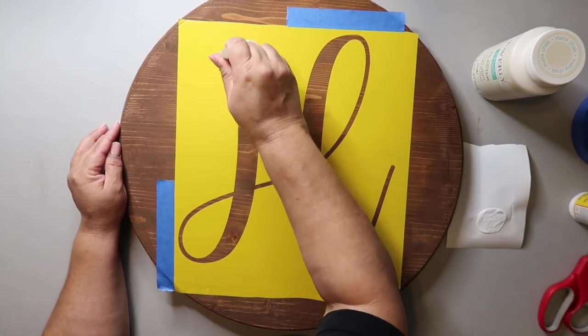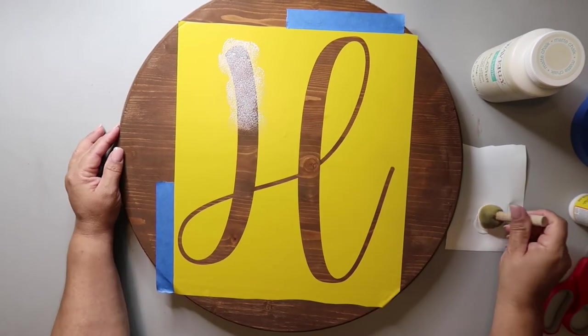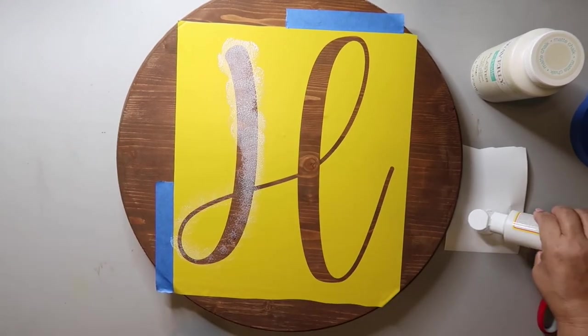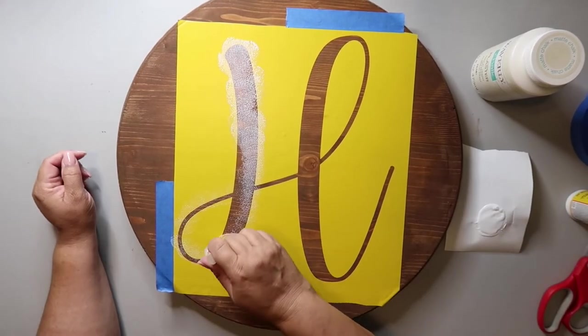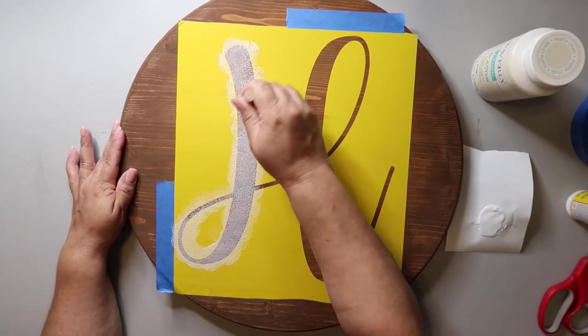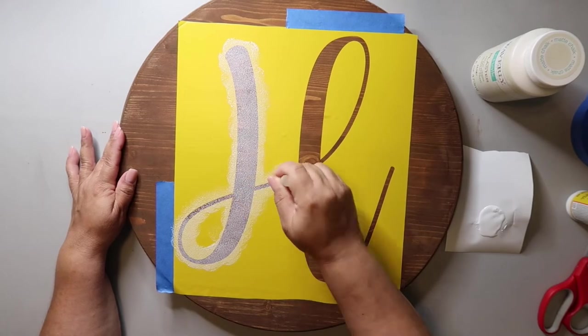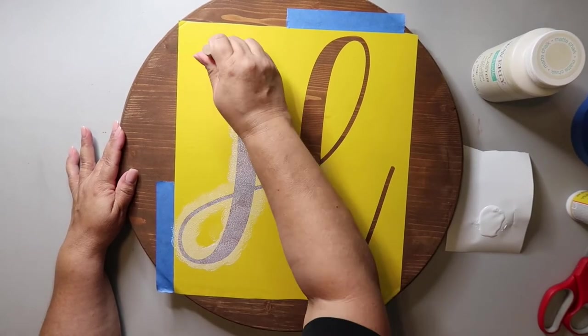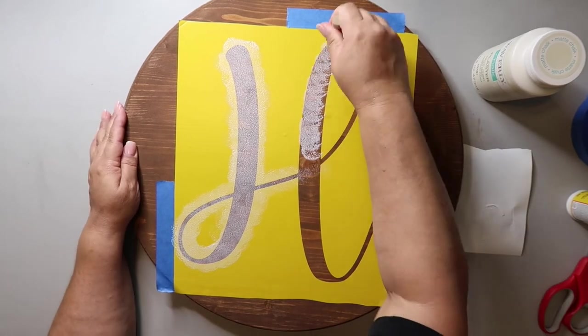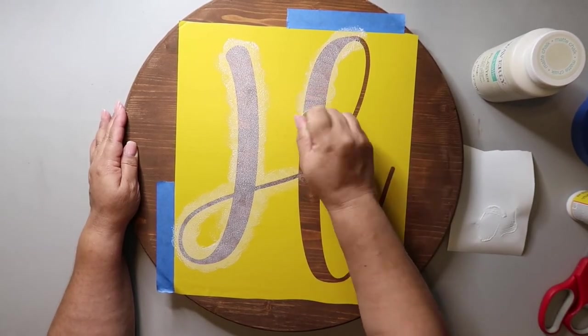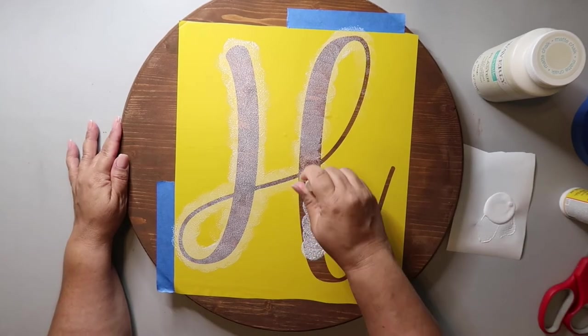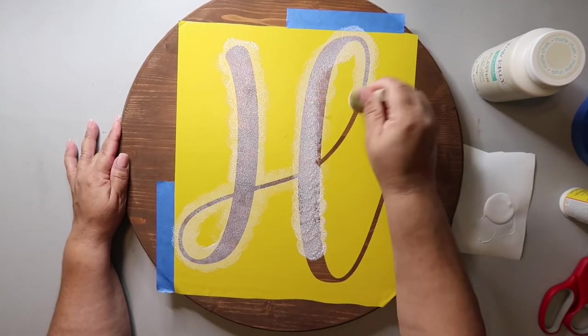Now the first step is going to be to put Mod Podge over the stencil area and this is to help minimize and hopefully prevent the paint from seeping under the stencil. I did add some painters tape to the parts of the stencil that were close to the edge just so I wouldn't accidentally get anything onto the wood that I didn't want. I'm using a sponge dauber that I got from Dollar Tree. I was trying to look at what I was doing to apply the Mod Podge and I just bounce it up and down in a typical stenciling manner. Just remember less is more, you can always add more later.